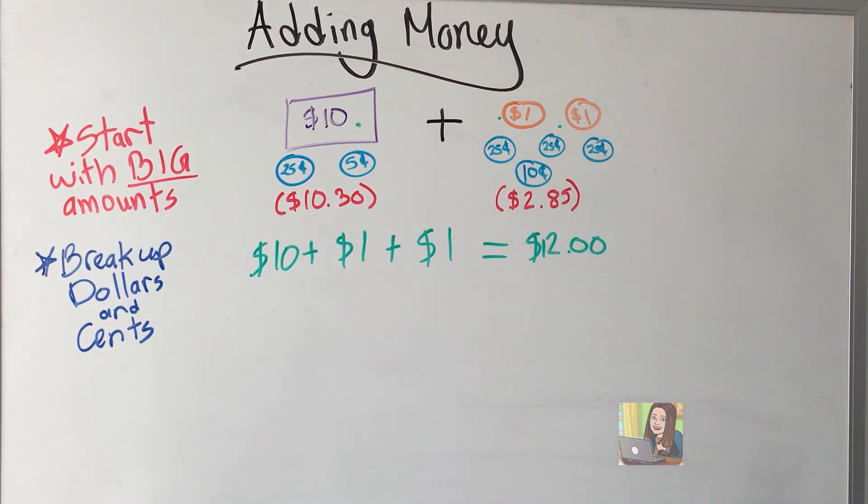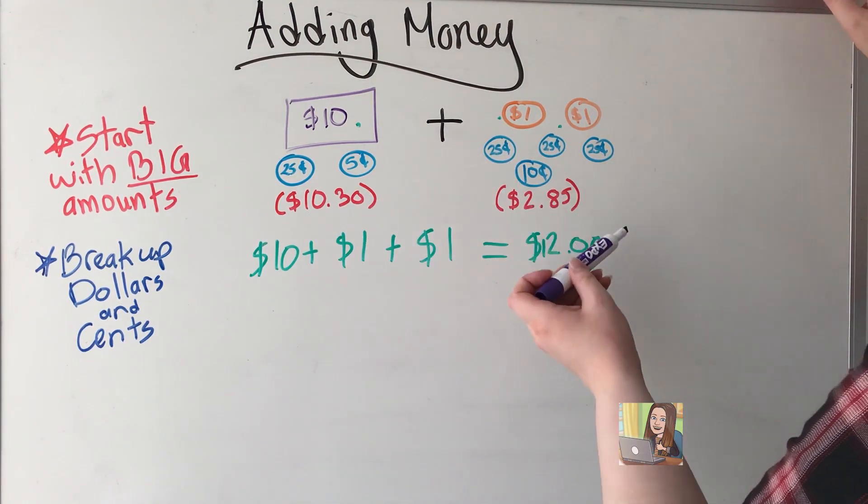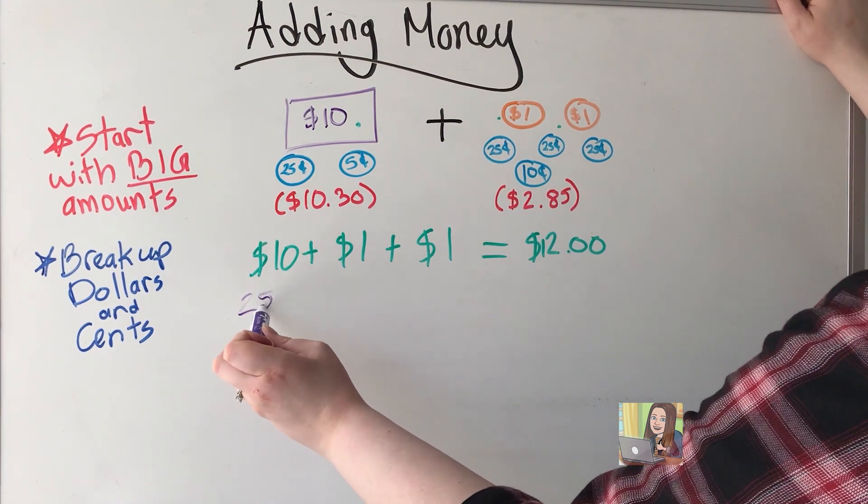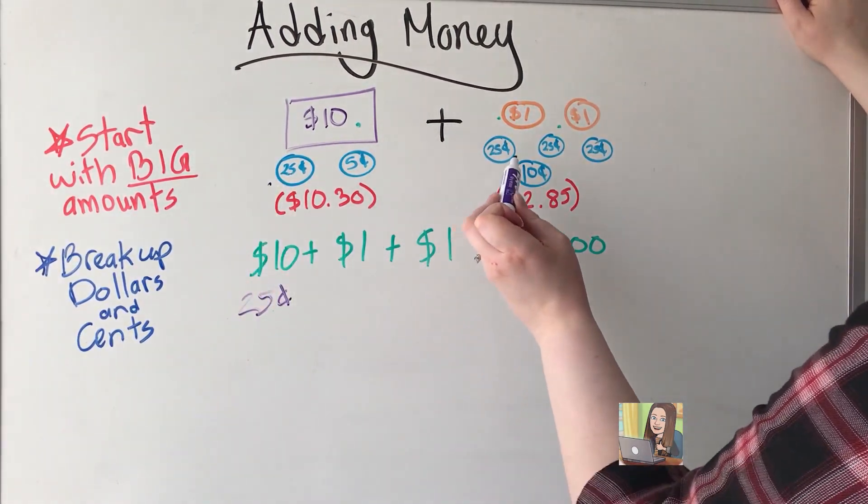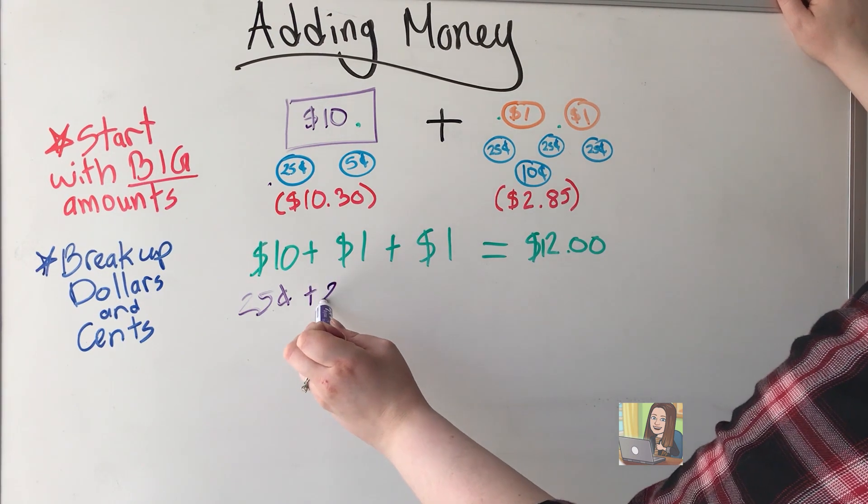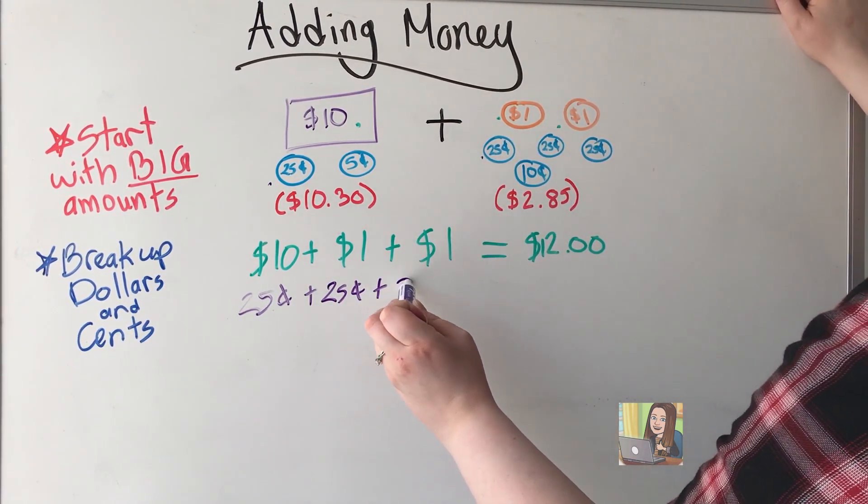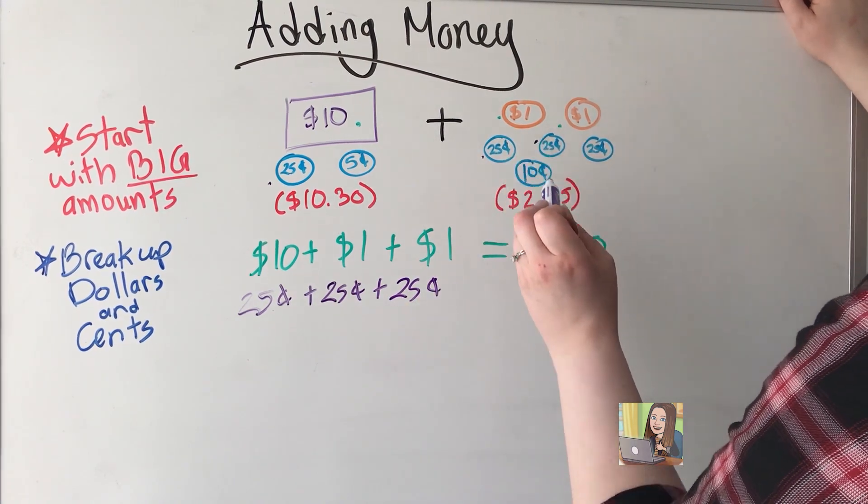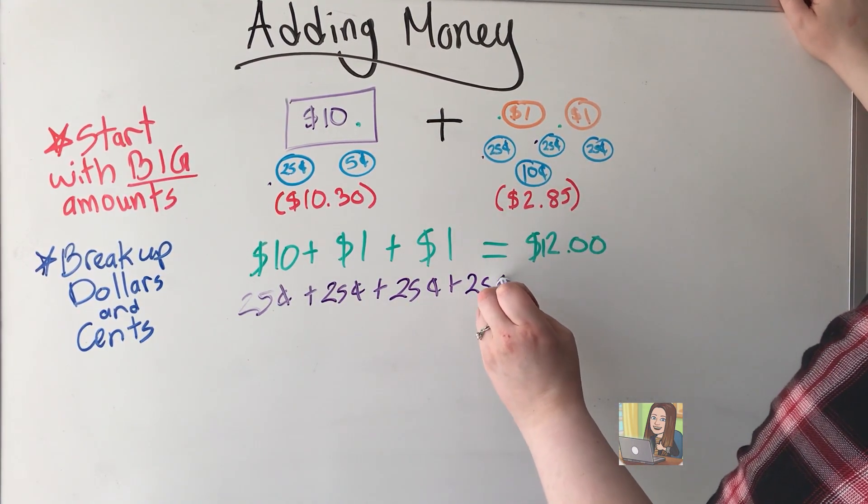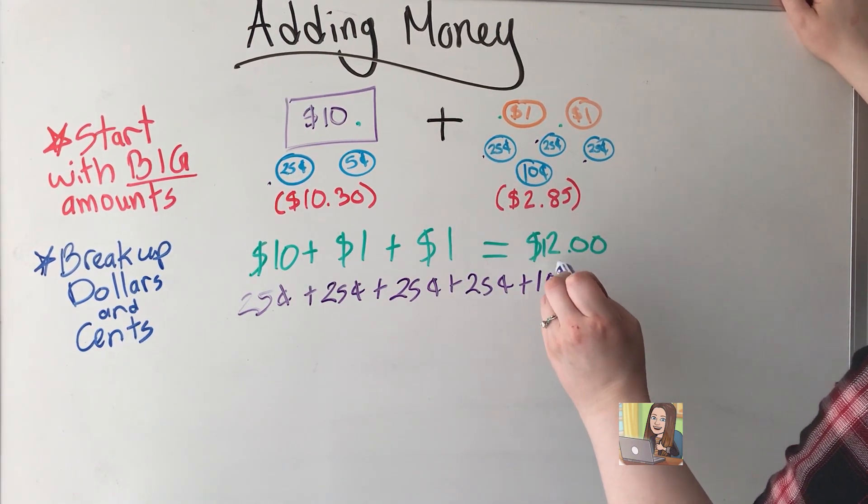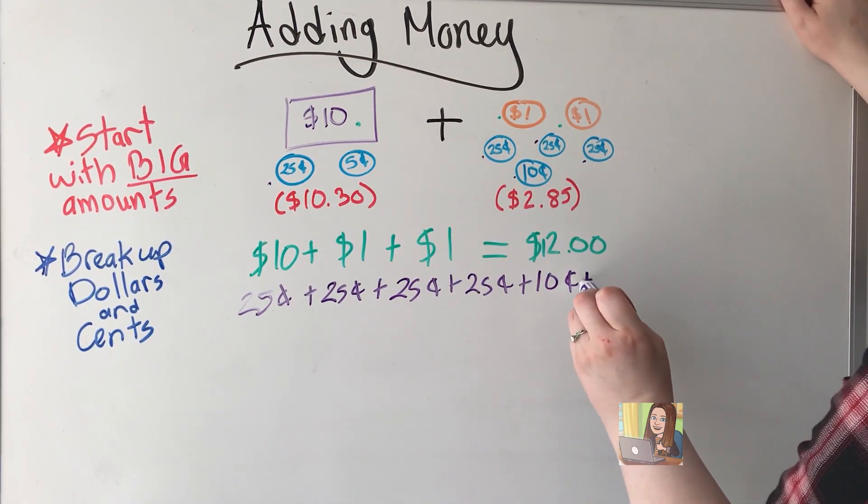Now we'll go to our cents. Looking for our biggest ones first. I have $0.25. I have another $0.25. Another one and one more. Then I have a $0.10 and a $0.05.